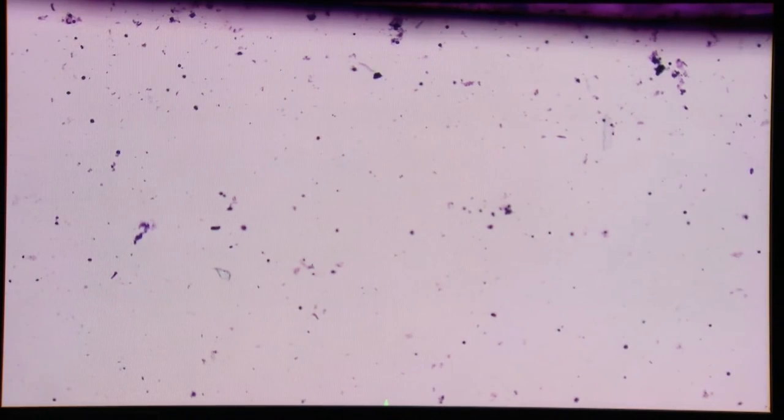There's the edge of the coverslip and you want to slowly go along looking for cells, clumps, casts, and any large crystals or debris. You do this on both stained and unstained sediment on 10 power, which is low power.